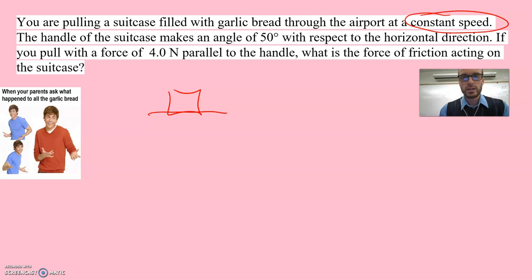The handle of the suitcase makes an angle of 50 degrees. That's kind of a steep one there. I'm just going to draw this to kind of indicate which way it's going. 50 degrees with respect to the horizontal direction. If you pull with a force of 4 newtons parallel to the handle, that means in the direction of the handle, of course, what is the force of friction acting on the suitcase?